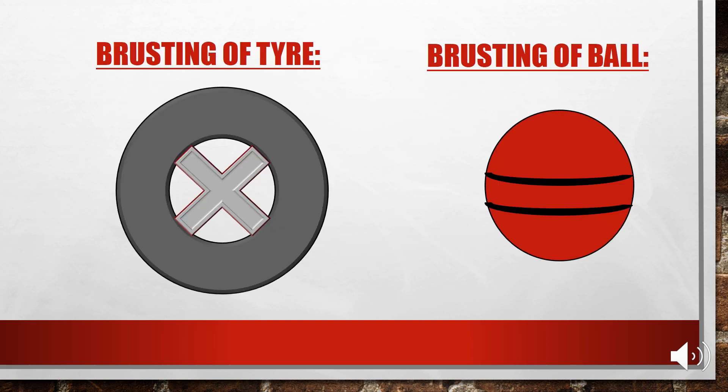Bursting of a tire or a football is the third example of diffusion from our routine lives. The tire is filled with gas molecules, so inside the tire the gas pressure is high. When it bursts, the gas molecules diffuse or spread out from the high pressure region towards the low pressure region, and thus the diffusion process takes place.